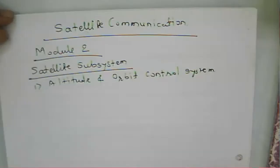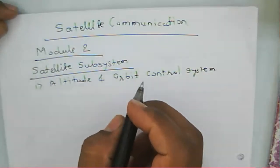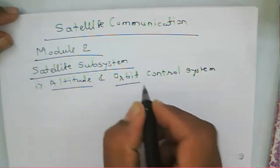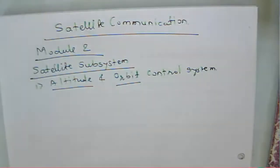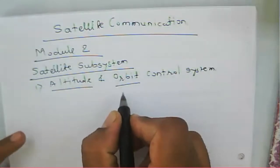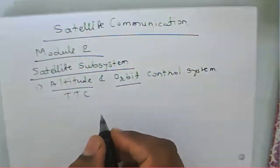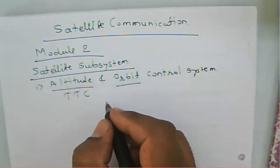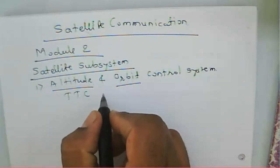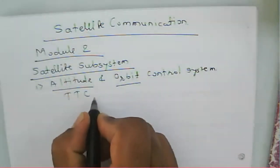Welcome to the satellite communication course. Today we will learn Module 2, in which we will learn about satellite subsystems. There are two main components: one is the altitude and orbit control system — how to control the altitude and orbit of a satellite — and this can be controlled using the TTC command.